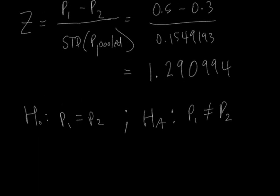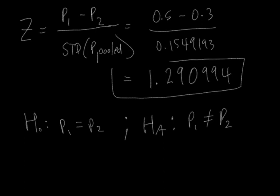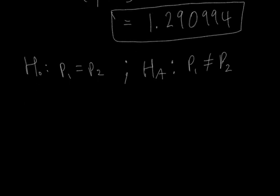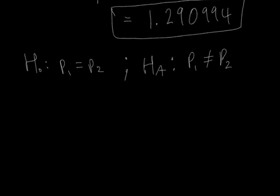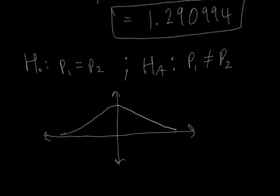This value that we're getting here, if we look on a standard normal distribution - there's a mean of 0, and then 1 standard deviation is here, 2 is here, minus 1 is here, and minus 2 is here. So 1.29 will fall somewhere around right here.